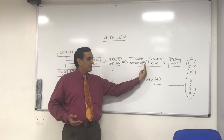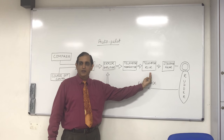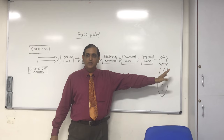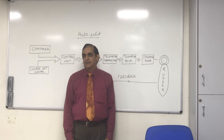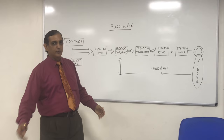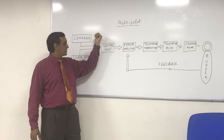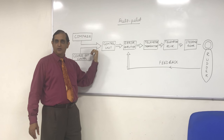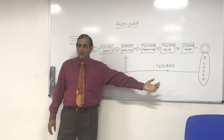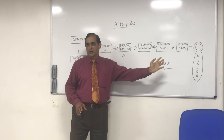Generally this is what happens on the bridge. Then you have a telemotor receiver, generally in the steering flat, which operates the steering gear and finally operates the rudder. When the rudder is operated, the compass course will change, the difference reduces, and the same cycle goes on. This is generally how the autopilot works, looking at this block diagram.